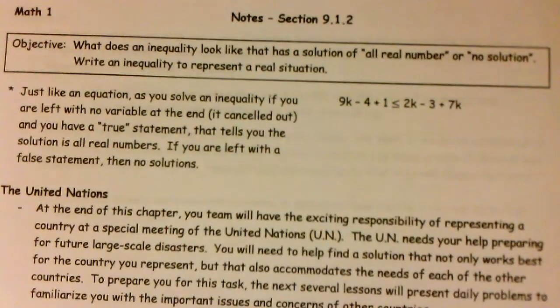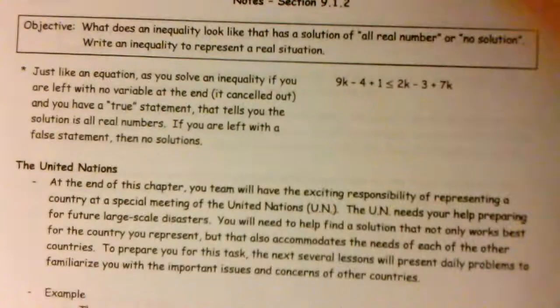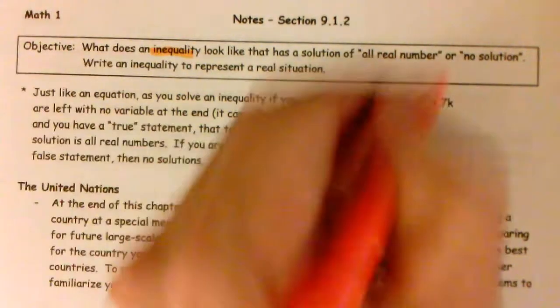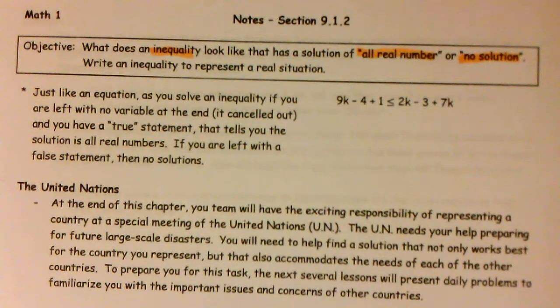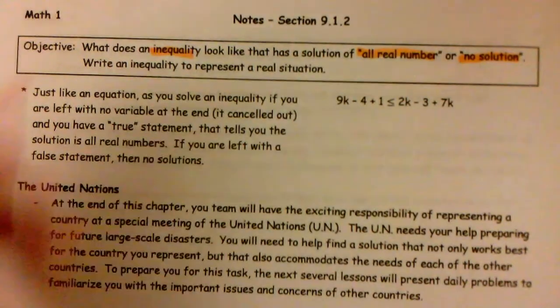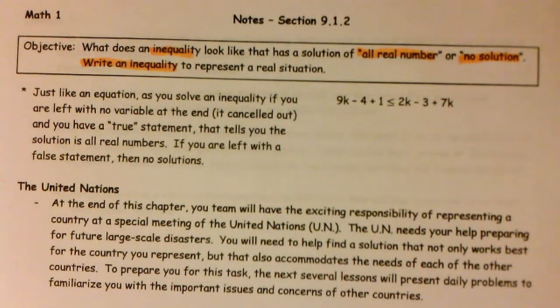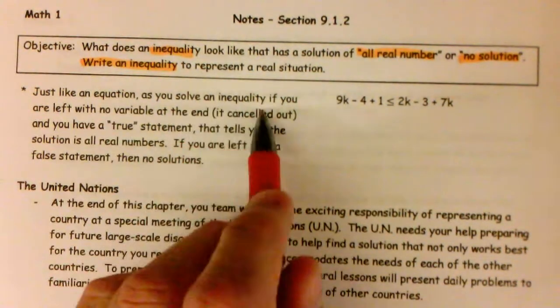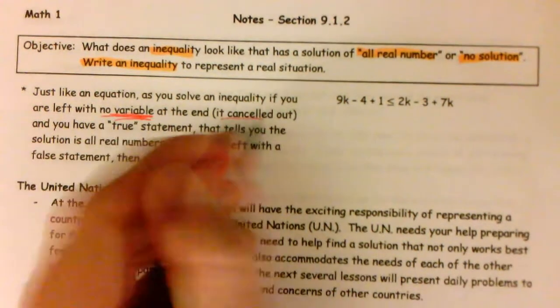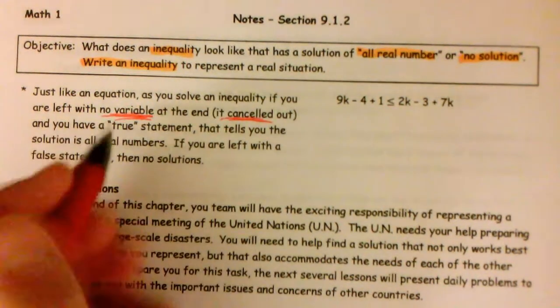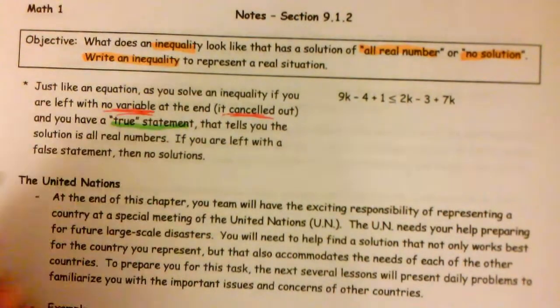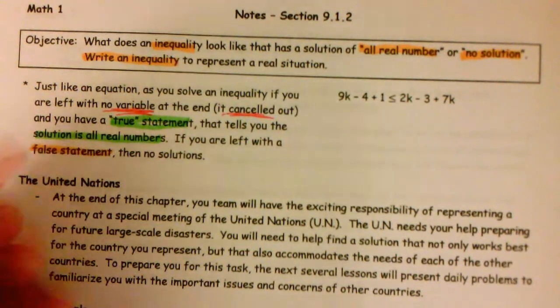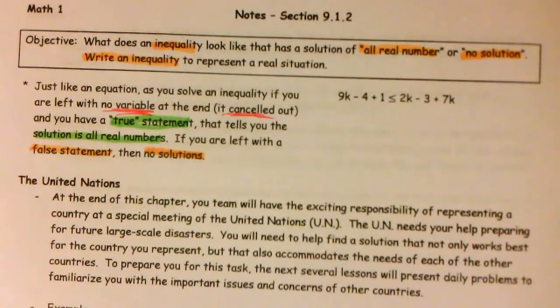So today, as we go to the second section of chapter nine, our goal is to look at two things. First of all, when you have an inequality, what happens when the answer is all real numbers or no solution? And the main thing we're going to look at today is writing an inequality to represent a real situation. Let's knock this first one out pretty quickly. Just like an equation, when you solve an inequality, if you are left with no variable because it canceled out and you have a true statement, the solution is all real numbers. And if you are left with a false statement, then there's no solutions.